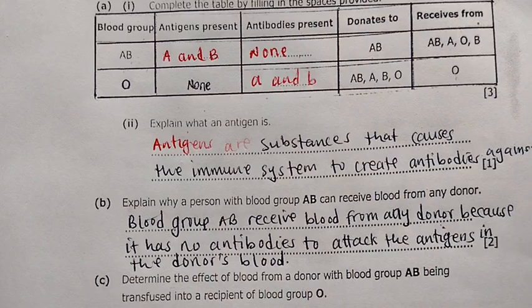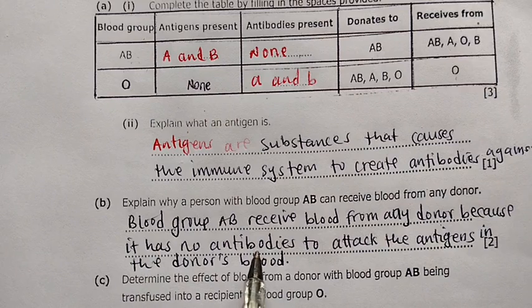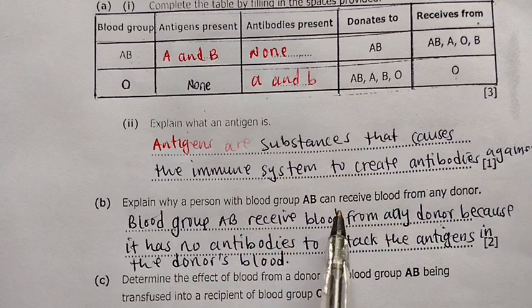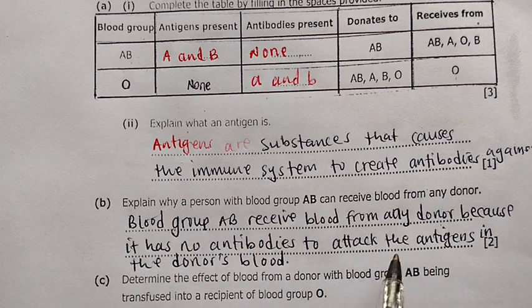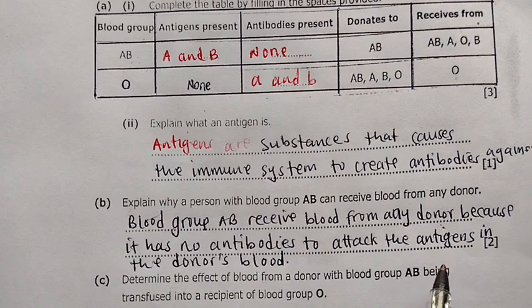When an antigen-antibody attack happens, the person is going to have a clump of blood. So this is why a person with blood group AB can receive blood from any other donor — because they have no antibodies that can attack the antigens in the donor's blood.